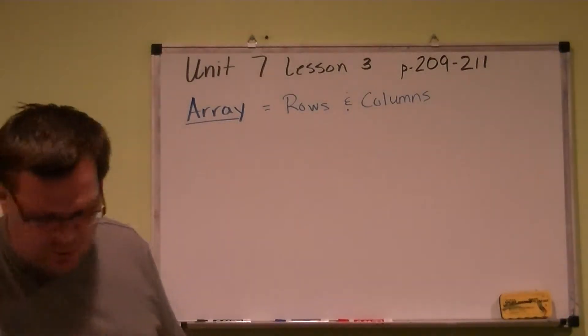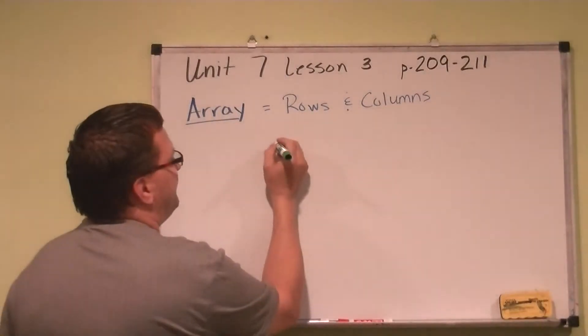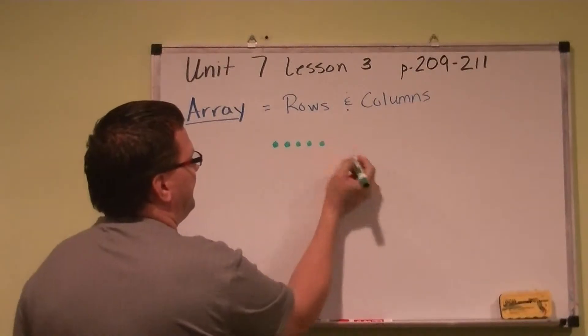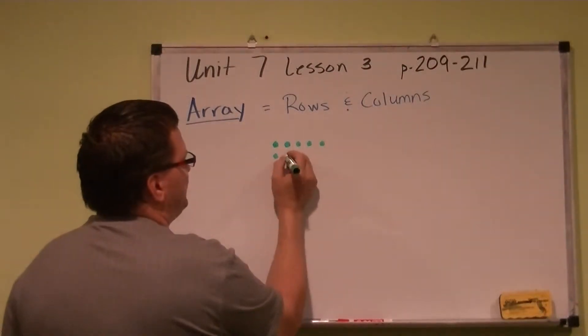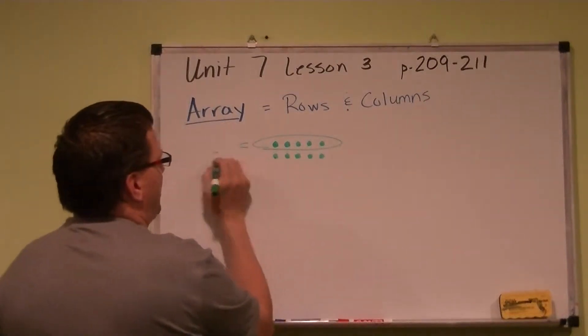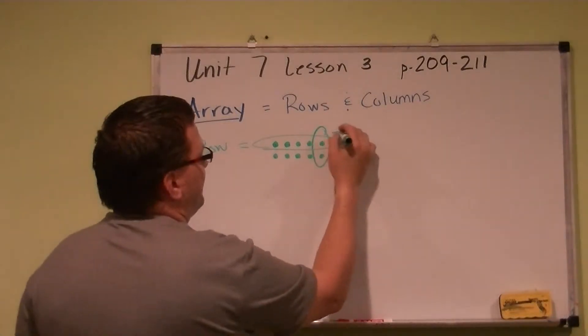Just like our sample question, it says we have two rows of five. So we have one, two, three, four, five. And then we have two rows of it. And this is what we call a row.